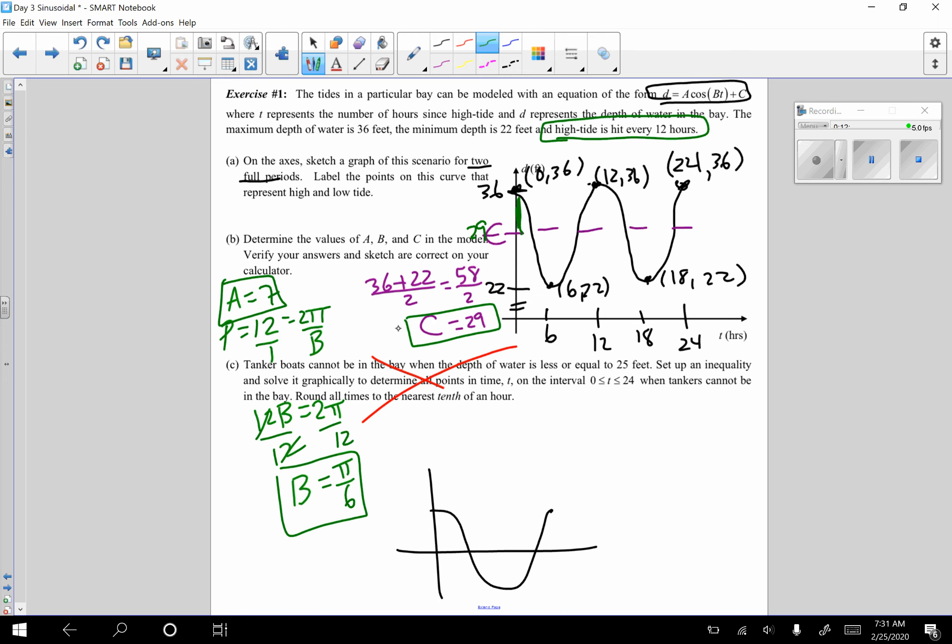The last thing, tanker boats cannot be in the bay, blah, blah, blah, when it's less than or equal to 25 feet. Okay. So I'm going to do this in red because it cannot be, it has to be less than or equal to 25. So 25 is going to be somewhere over here. Okay. 25. It says, set up an equality and inequality and solve it graphically to determine all points in time on the interval, blah, blah, blah, when tankers cannot be in the bay. Round all times to the nearest tenth of an hour. Okay.